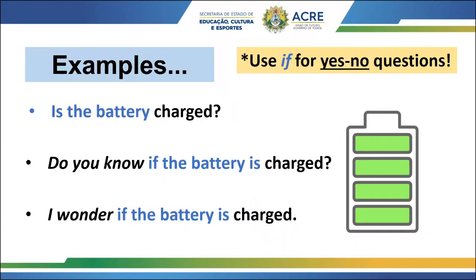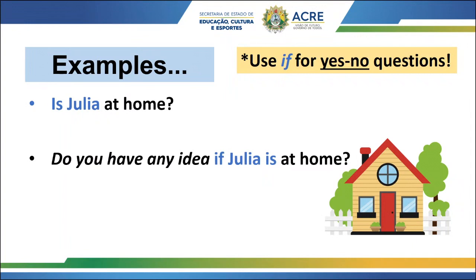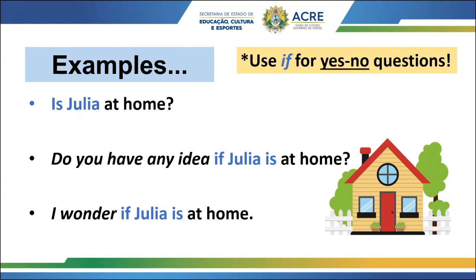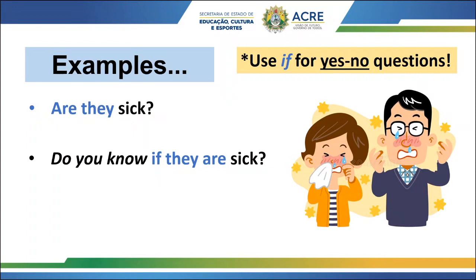'Is Julia at home?' — direct question. 'Do you have any idea if Julia is at home?' And: 'I wonder if Julia is at home.' Don't forget to use 'if.' Next: 'Are they sick?' — direct question. 'Do you know if they are sick?' Look at the position of the pronoun and the verb 'to be.' 'I wonder if they are sick.'